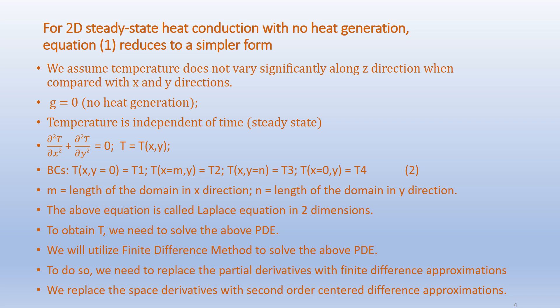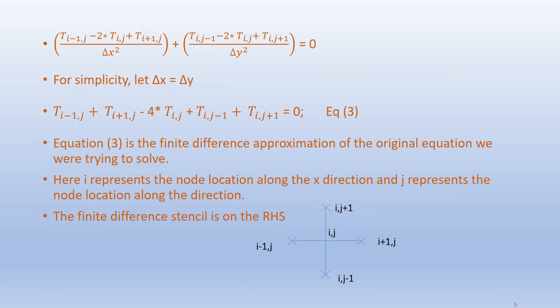We will utilize the finite difference method to solve the above PDE. To do so, we need to replace the partial derivatives with finite difference approximations. We replace the space derivatives with second-order central difference approximations. Accordingly, we get: [T(i-1,j) - 2T(i,j) + T(i+1,j)] / Δx² + [T(i,j-1) - 2T(i,j) + T(i,j+1)] / Δy² = 0. For simplicity, assuming Δx = Δy, this simplifies to: T(i-1,j) + T(i+1,j) + T(i,j-1) + T(i,j+1) - 4T(i,j) = 0.